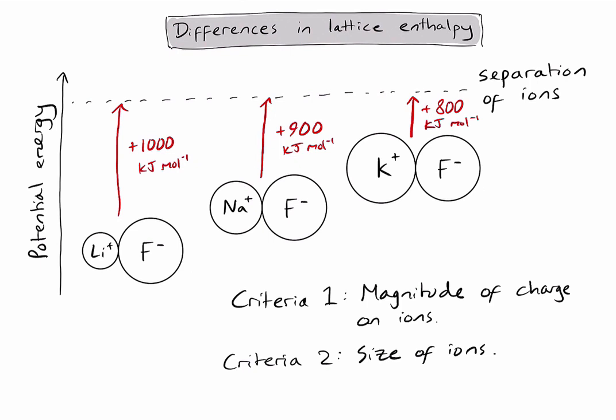So to summarize, if my ion is smaller, it can pack more closely to the oppositely charged ion and therefore have a greater electrostatic attraction, making it more stable or have a lower potential energy. And this means that I'm going to require more energy in order to break those ions apart.